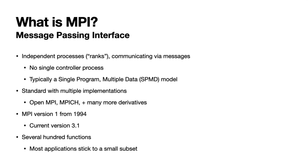So what is MPI? It stands for the Message Passing Interface, and it's an approach to parallel programming based on having multiple independent processes which communicate between themselves via messages. It's distinct from other models of parallel programming, such as the one in Julia's distributed package, in that there's no single controller process. Programs written using MPI typically use a Single Program Multiple Data model, where all the processes execute the same program and vary what they do based on their input data.